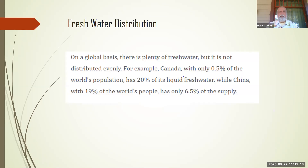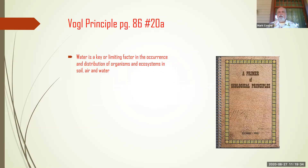Water is not distributed evenly on the planet. Canada, with very few people, has 20% of the liquid water, while China with a much larger population has a lower percentage. This leads to a key principle: water is a limiting factor in the occurrence and distribution of organisms, ecosystems, soil, air, and water. Most organisms, including people, live near water — in the US, people tend to live on the coasts, around the Great Lakes, and along the Colorado and Mississippi rivers.